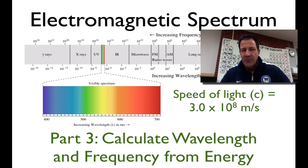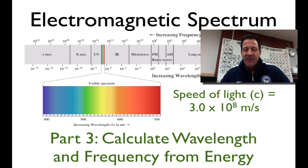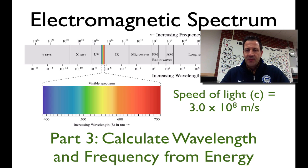This is part three of my Electromagnetic Spectrum Series, and I think it might be the last one. In this part, we're going to calculate the wavelength from the frequency and the energy. We're actually going to start out with energy, then work our way through the frequency, and then to the wavelength — the opposite direction we went in part two.